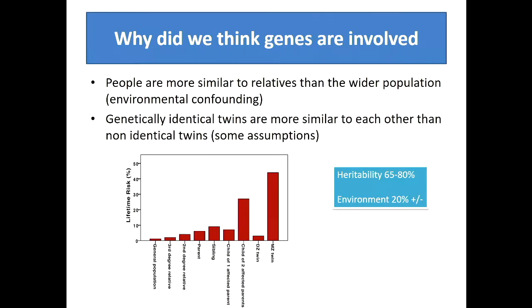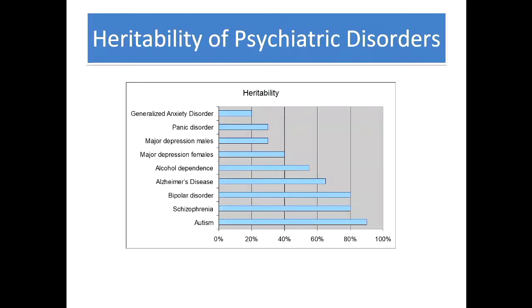The heritability - the involvement of genes - is about 60% to 80%, though there's imprecision in the measurement. There is an environmental contribution; it's not entirely genetic. If you do the same types of studies for other psychiatric disorders, you find they vary in the relative importance of genes. Even anxiety has a measurable genetic component, all the way through to autism, which is the most genetic of the disorders. Schizophrenia and bipolar disorder are both predominantly genetic.